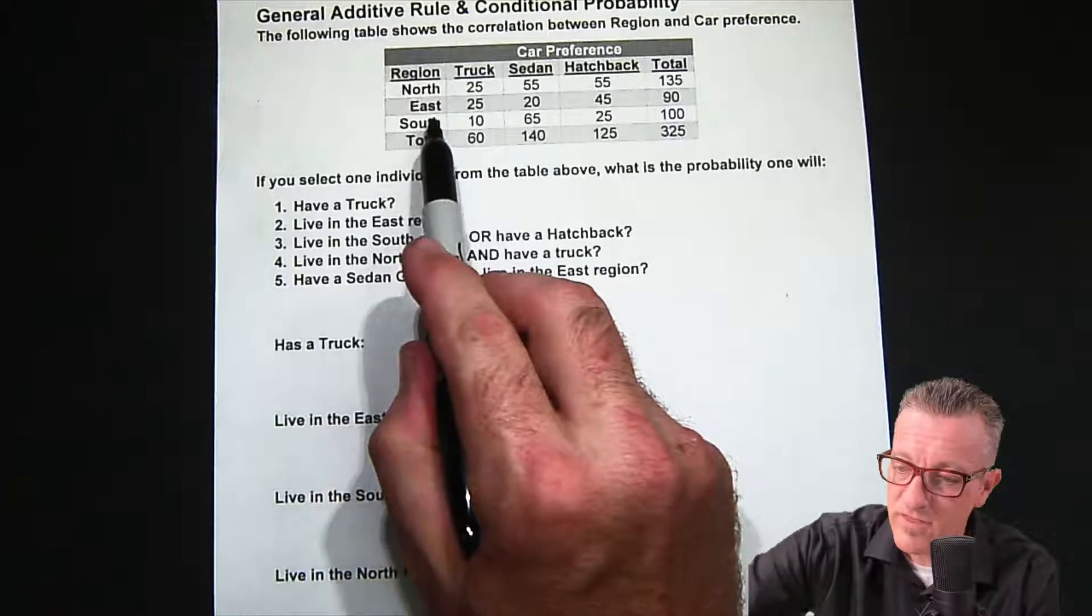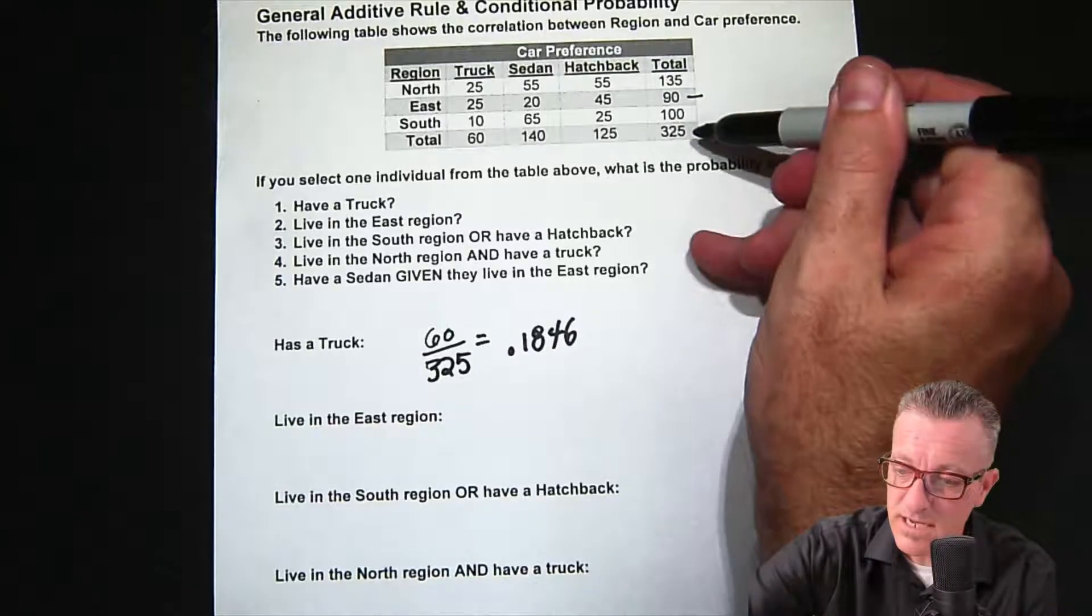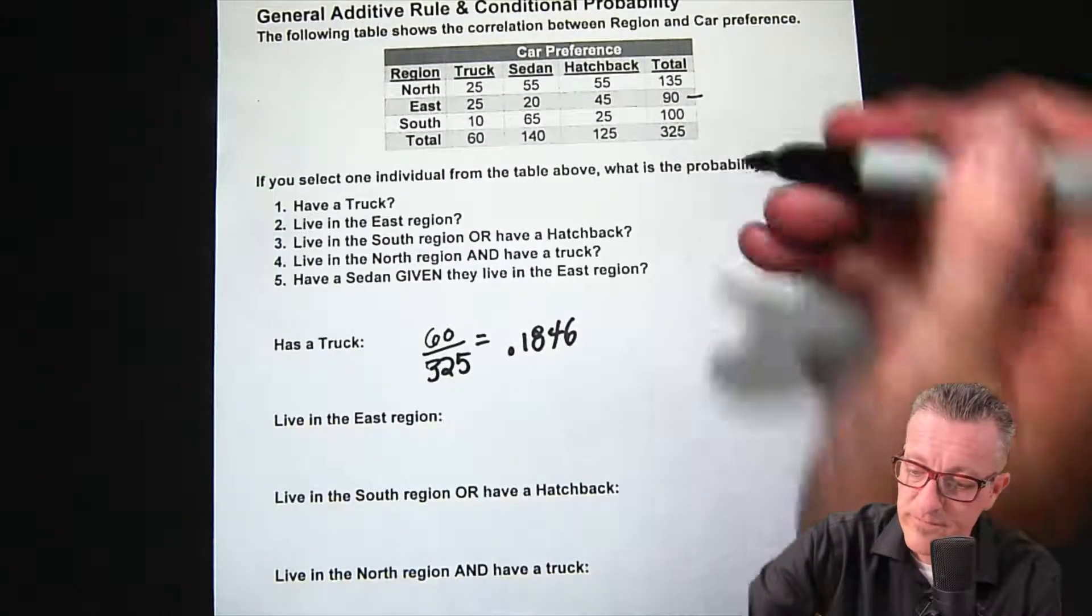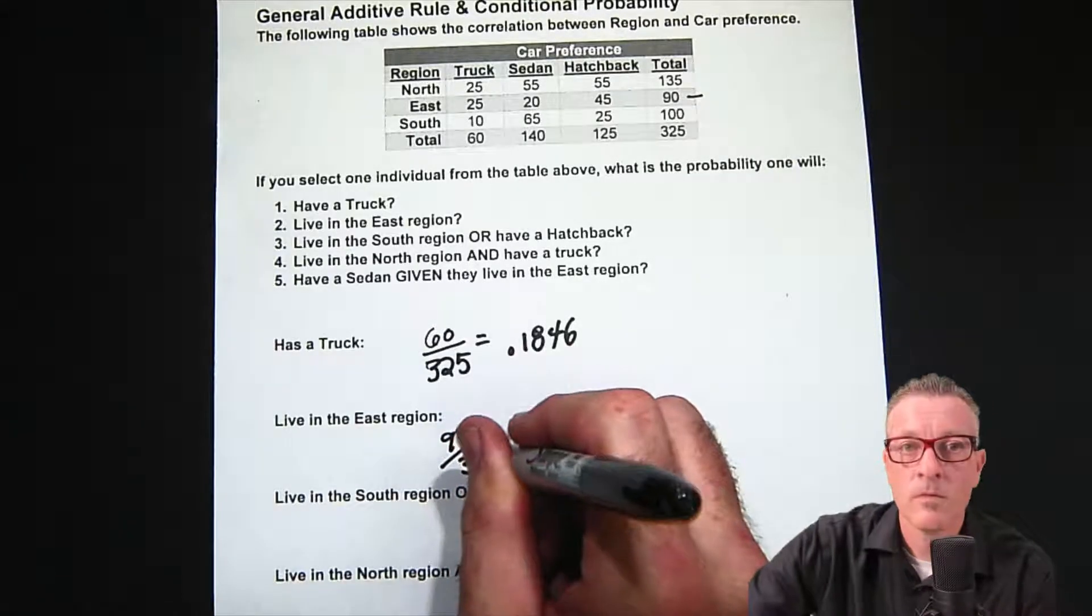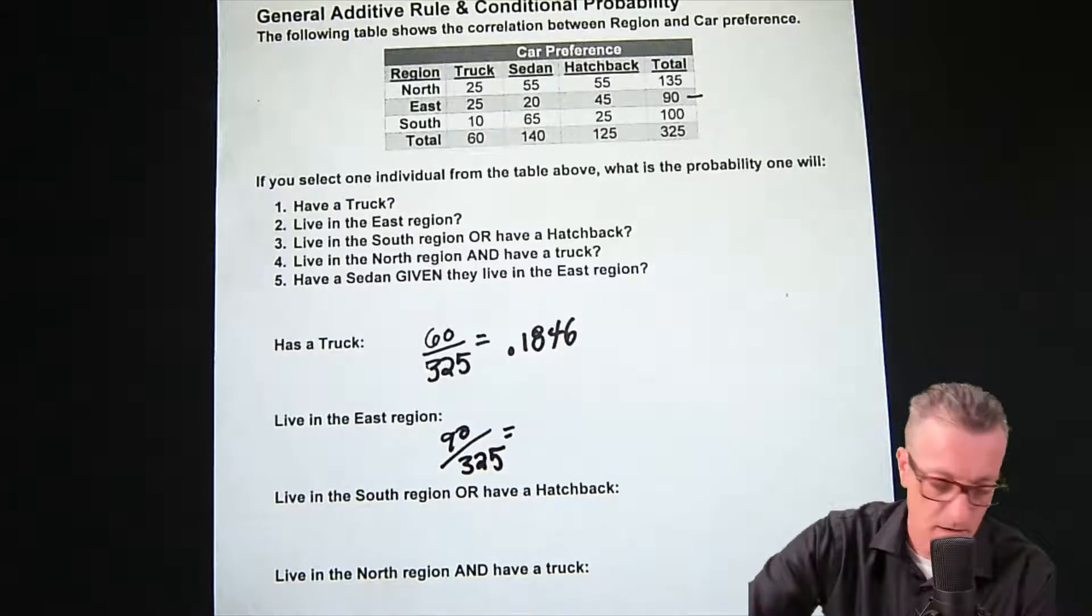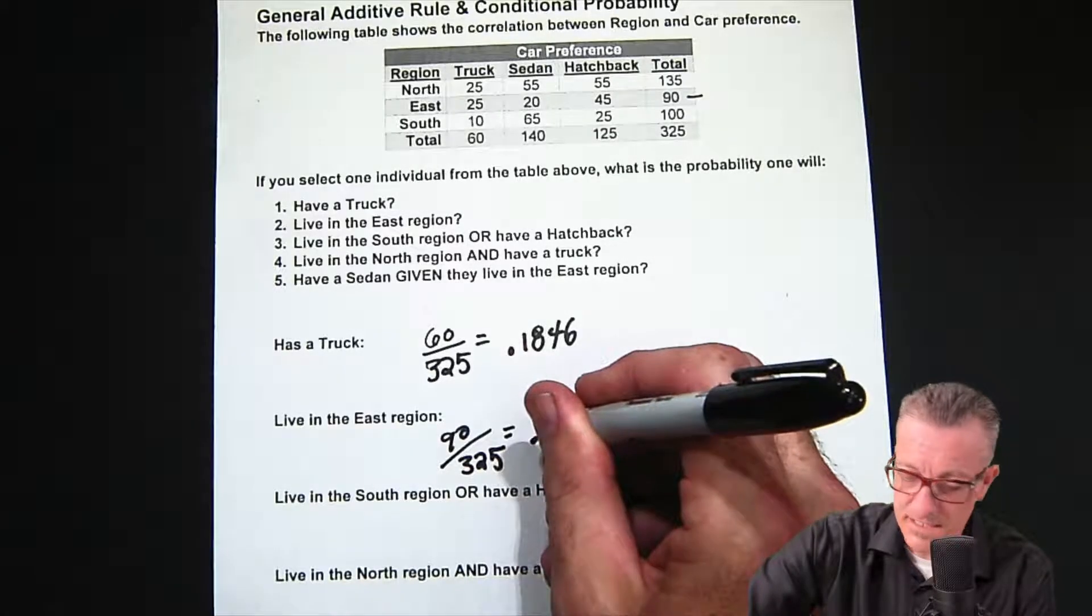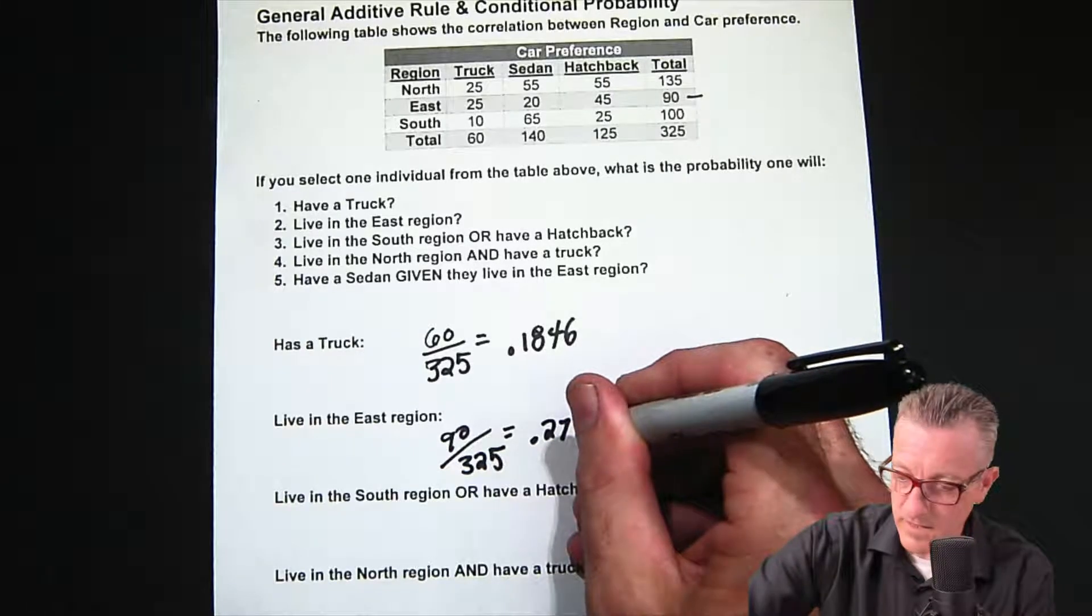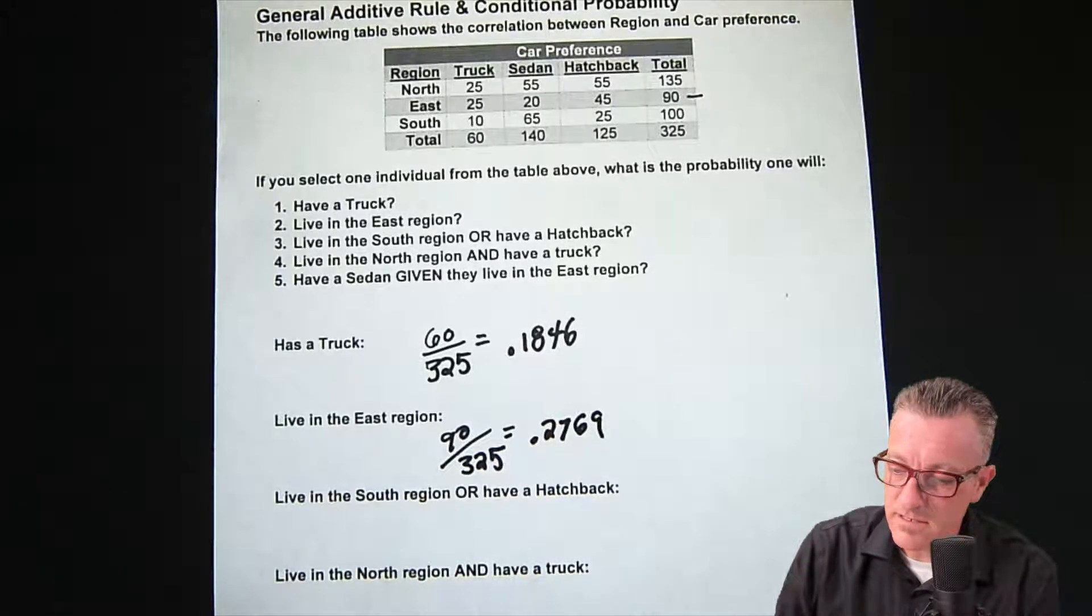Live in the East. We add up all of the East and we get 90, and then that's going to be 90 as our numerator and then over the denominator of 325. We could reduce that and leave it as a fraction, or work it out and leave it as a percentage type format or a better kind of probability appearance and it ends up being 0.2769.